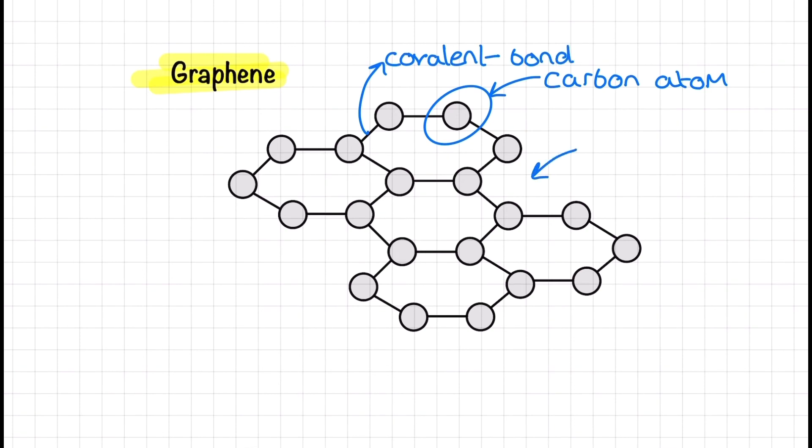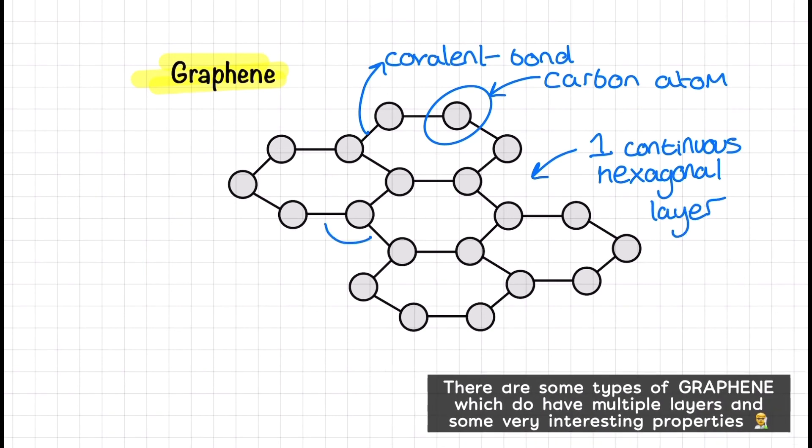So we have our carbon atoms once again and as you can see they are once again in a hexagonal layer which is very similar to graphite except we have no multiple layers and we don't consider any London forces present in the structure.